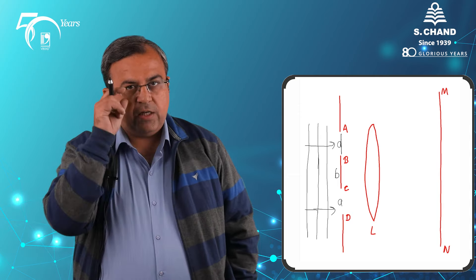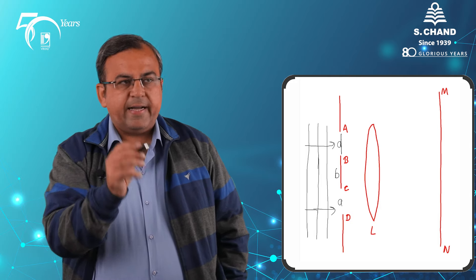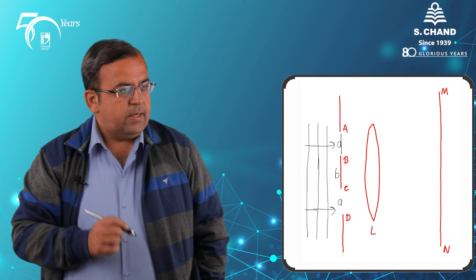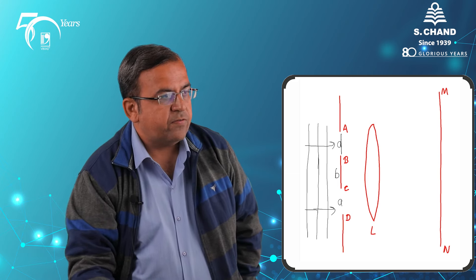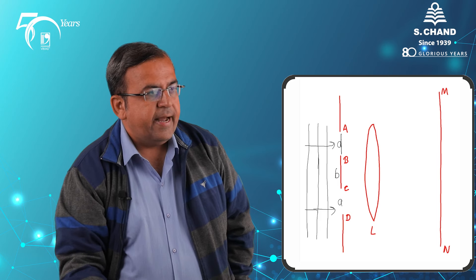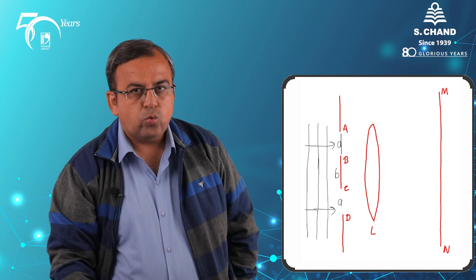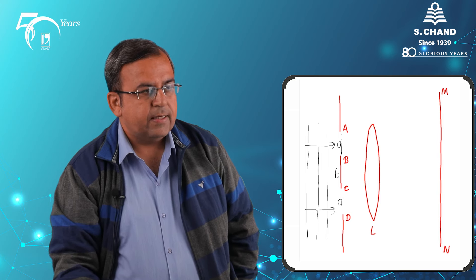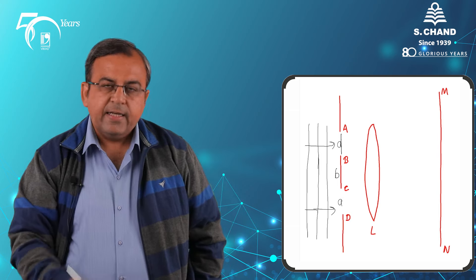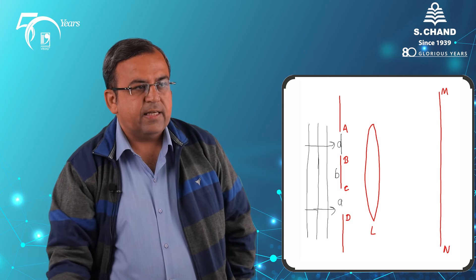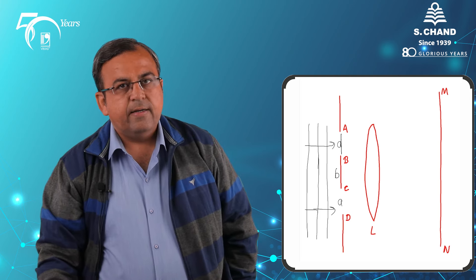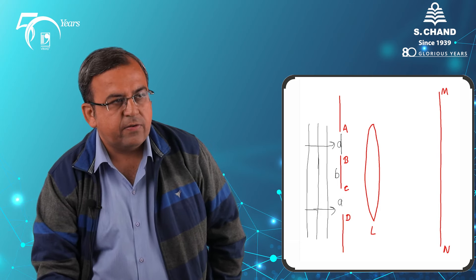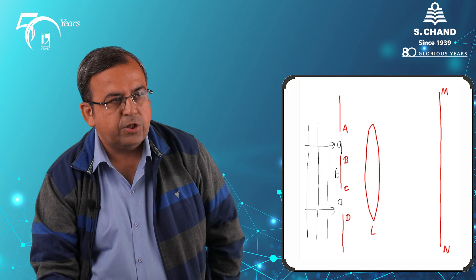The light incident — plane waves incident onto XY — these are the plane waves incident onto it. When they are incident on these two slits AB and CD, every point will work as a secondary source, and then the lens converges it, making a maximum onto screen MN.